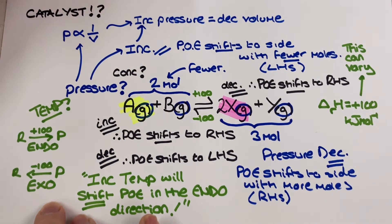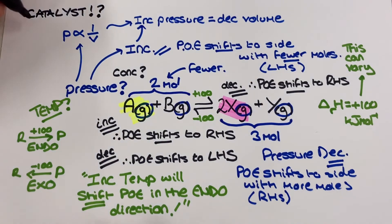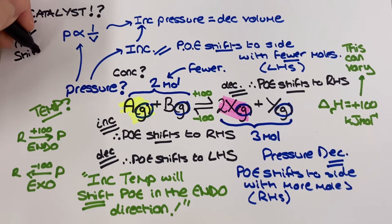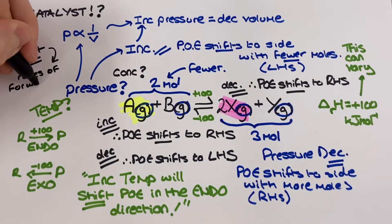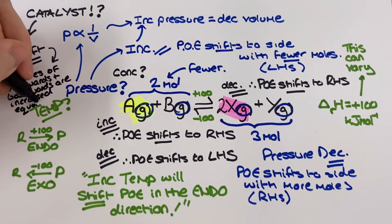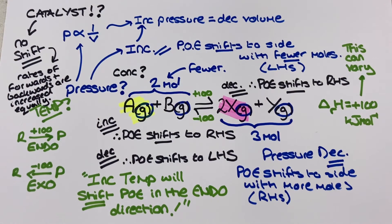On a final note for this video I want to talk about catalysts. A catalyst will not affect the position of an equilibrium and this is because a catalyst will increase the rates of the forwards and the backwards reaction by the same amount. So there's no shift in the position however we can reach the equilibrium quicker with the use of a catalyst. We can sometimes say that a catalyst increases the rate of attainment or decreases the time taken to reach equilibrium.